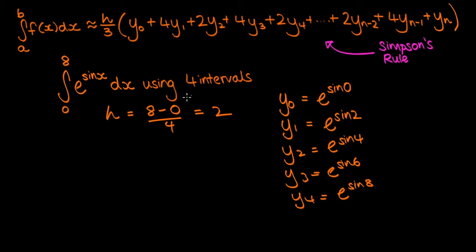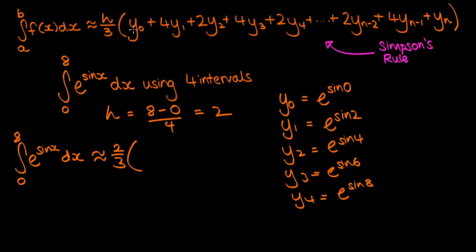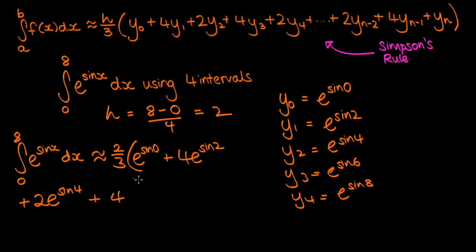Now we have all the y terms and the value of h, so we can plug them in. The definite integral from 0 to 8 of e to the sin(x) dx is approximately equal to h/3, so 2/3 multiplied by: y0 + 4·y1 + 2·y2 + 4·y3 + y4, which is e^sin(0) + 4·e^sin(2) + 2·e^sin(4) + 4·e^sin(6) + e^sin(8). Plugging that into your calculator gives a value of 11.7 to 3 significant figures.